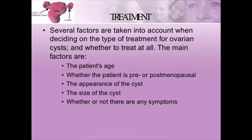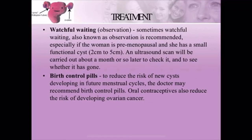Regarding treatment, the approach depends on several factors: the patient's age, whether the patient is pre- or post-menopausal, the appearance of the cyst, the size of the cyst, and whether or not there are any symptoms. Watchful waiting — or observation — is used especially if the woman is pre-menopausal and has a small functional cyst of 2cm to 5cm in size.